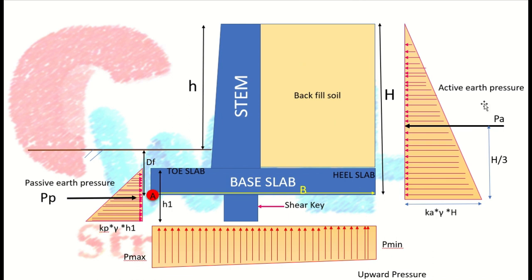How do we determine the values of active earth pressure and at which point it acts? Similarly for passive earth pressure — how to calculate the upward pressure, P maximum and P minimum, and how the downward force acts due to the self-weight of the retaining wall elements. I will explain all of this with one example.